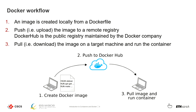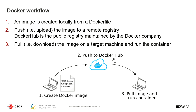Docker proposes a workflow that in its most basic form is composed of three steps. First, an image is created on a machine — even a common laptop — using a Dockerfile, which is the recipe-like file we mentioned. Once created, the image is pushed to a remote registry in the cloud; the default is Docker Hub. Once the image is on the cloud, another computer, always using Docker, can pull the image on the target machine and run the container created from the image.